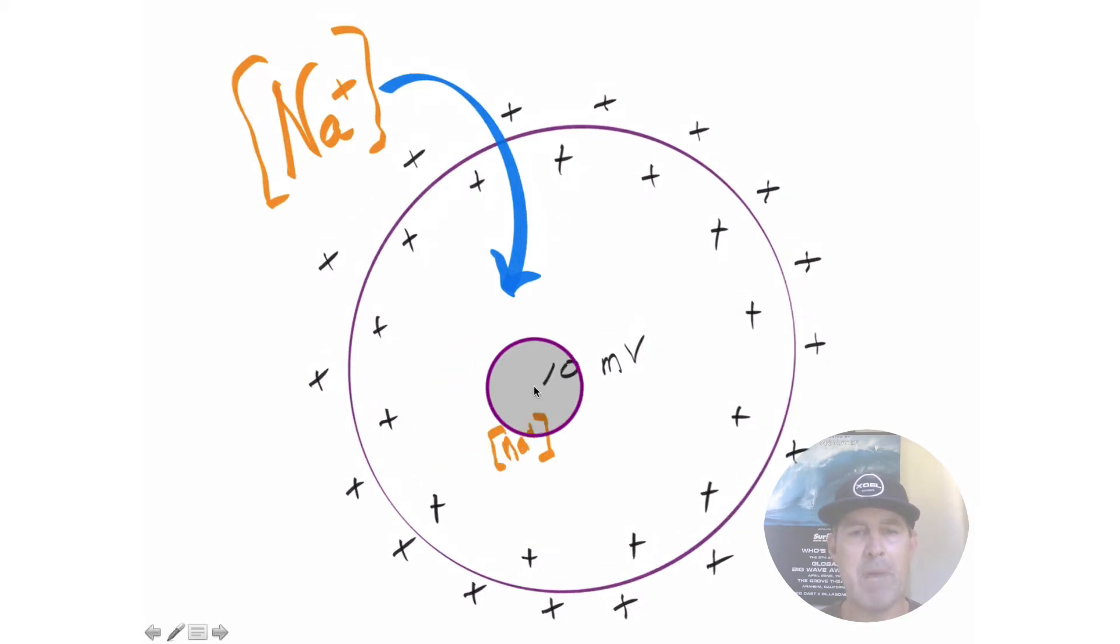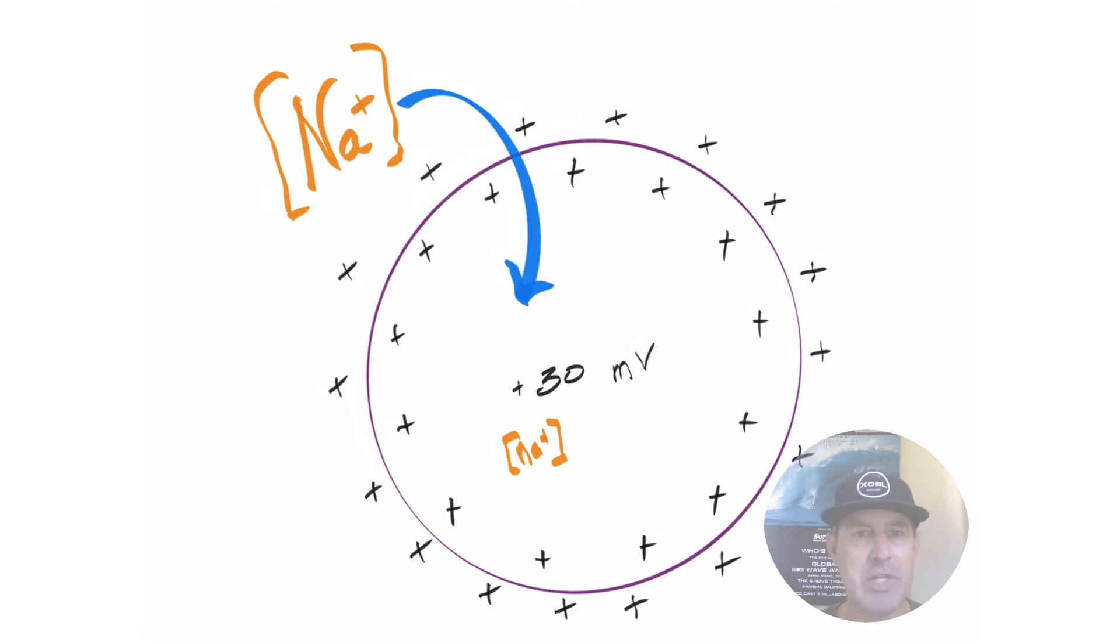Now, if we back up here, and this should say positive 10 right here, because we're positive in the cell, sodium no longer has that electrical gradient. That is to say, sodium is moving against its electrical gradient, because positive charges don't really want to be around other positive charges. And since the interior of the cell is now positive, it's moving against its electrical gradient. But because sodium's chemical gradient is so large, it disregards the fact that it's positive within the interior of the cell. We continue to see that right here, where we're now at positive 30 millivolts, and sodium is continually coming into the cell.